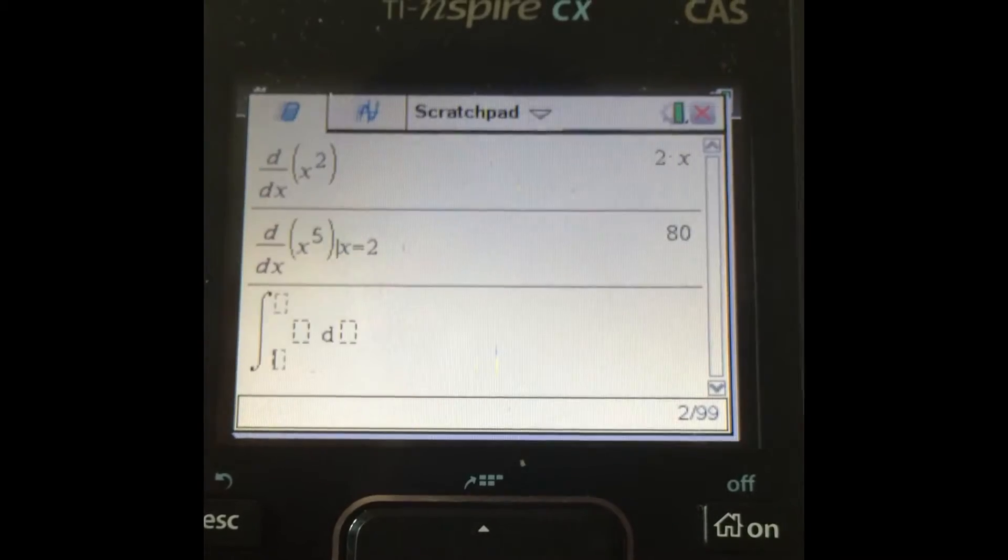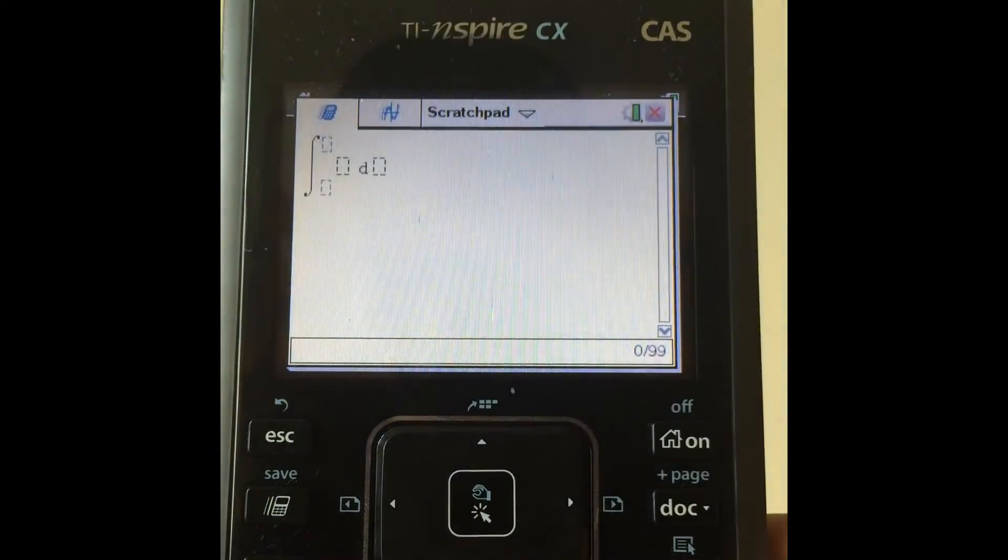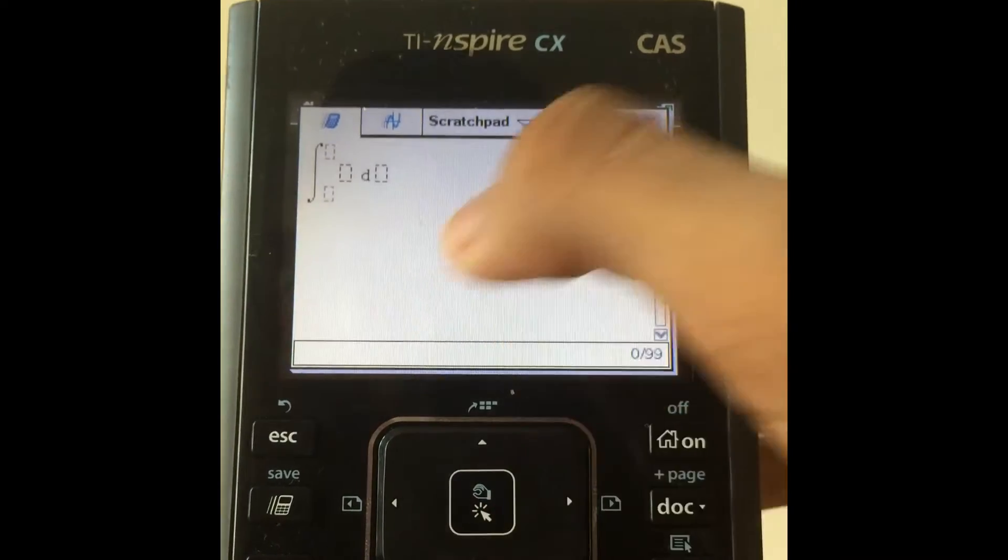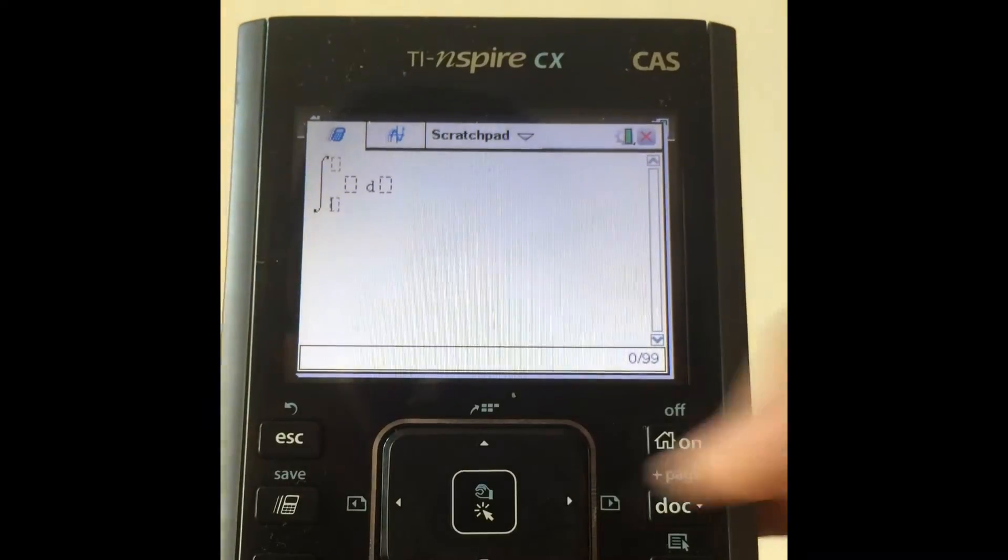Under the calculus, there's also integral, so it integrates it for you. Even though there's these options over here to put your bounds for the integral, you don't actually have to do it. So if you do put them, then it will give you a definite integral. If you don't put them, it will give you an indefinite integral.